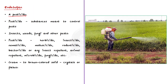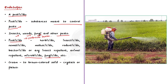Endosulfan is a pesticide. Pesticides are substances meant to control pests such as insects, weeds, fungi, and other pests. Pesticide is a collective term representing herbicide, insecticide, nematicide, molluscicide, rodenticide, bactericide, and other insect repellents, animal repellents, microbicides, fungicides, etc. All these substances used to control pests are collectively termed pesticides.